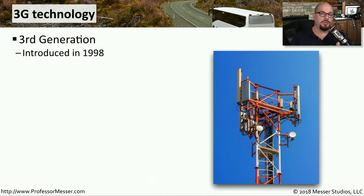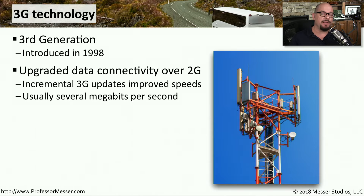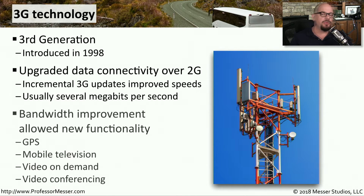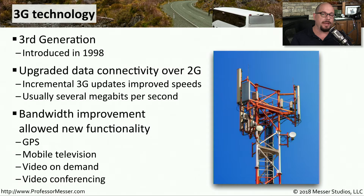3G networks were introduced in 1998, and these networks provided more data functionality than we had with the 2G networks. These 3G networks really changed how we started to use our mobile devices, because this increased bandwidth meant that we could have different types of applications. We were able to run GPS technologies, have video on demand, and use much more data than we were using with 2G.